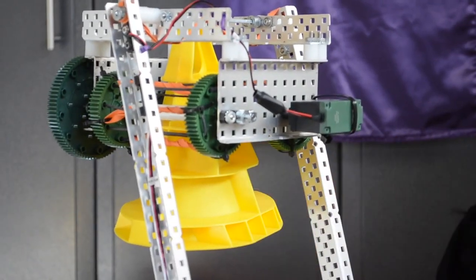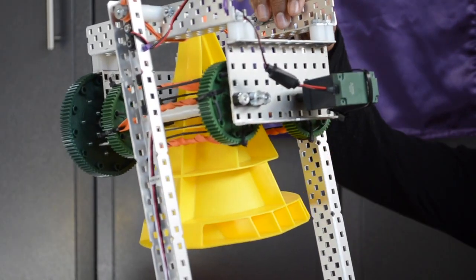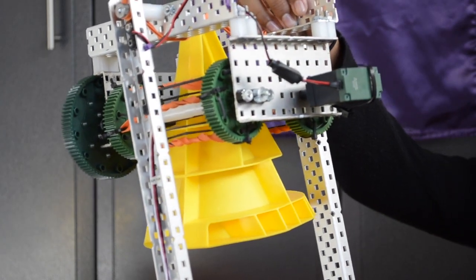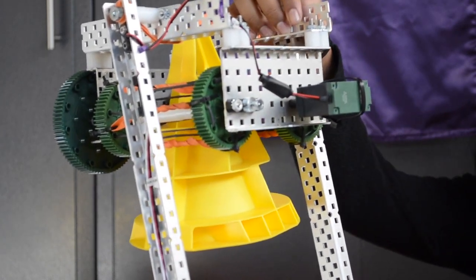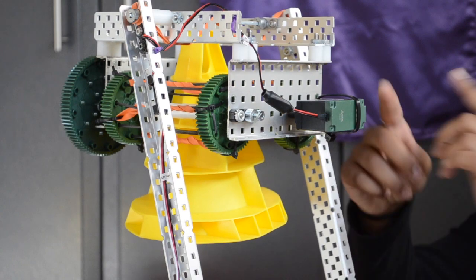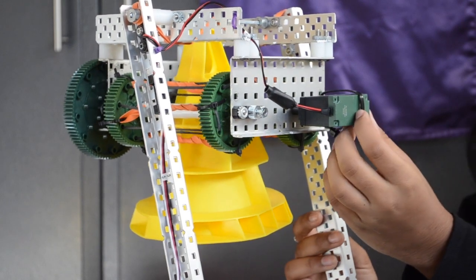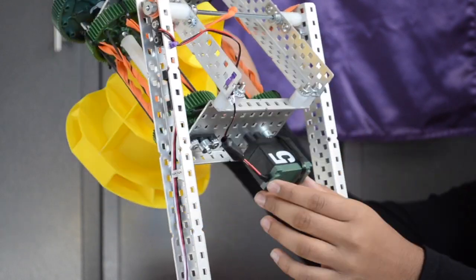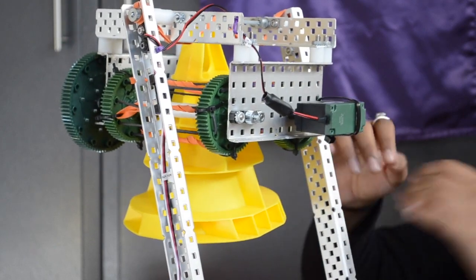What we did is we unscrewed the entire motor so it would fall apart and the internal gears would fall everywhere. We unscrewed the entire motor and we zip tied it onto the roller. In this case that works for chassis too.